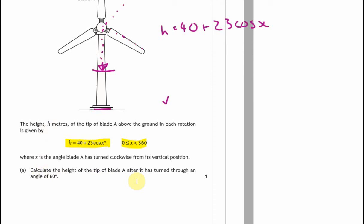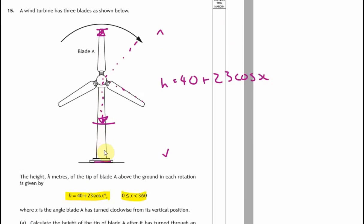If you think about what that equation is asking, what that equation is saying, the tip of the blade - the height of that above the ground is given by the formula. So that height there, h, is expressed by the formula 40 plus 23 cos x.